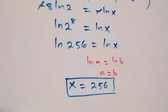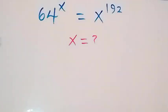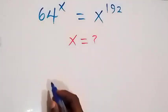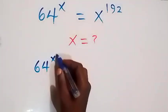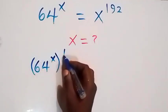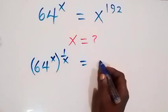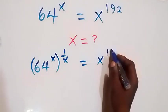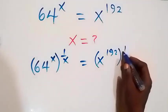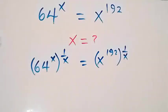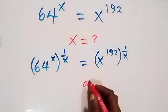Then we can use another method here. What we are given, we raise both sides to power 1 over x. So we have 64 raised to power x, then raised to power 1 over x, equals to x raised to power 192, and also raised to power 1 over x.